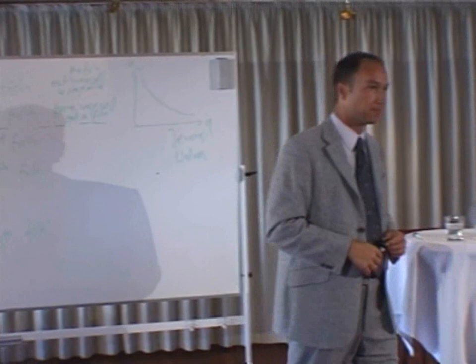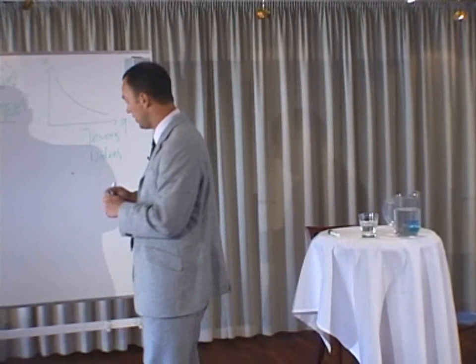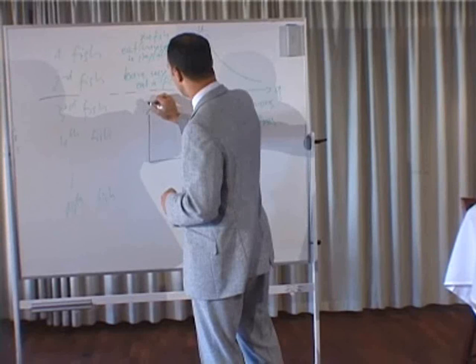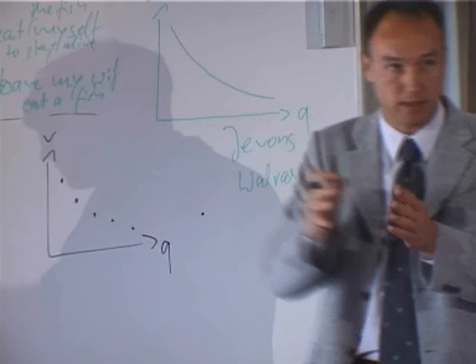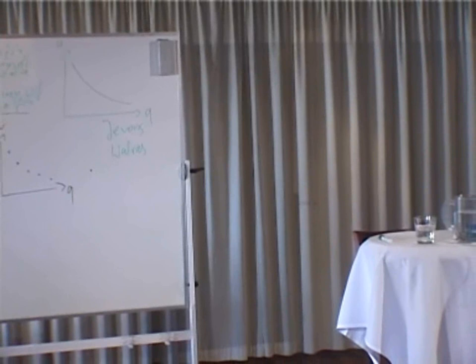We can express this in a curve, or rather in discrete and concrete dots — no continuous curve — in the case of fish. We have a very similar principle to Jevons and Walras, but there is one important difference that we need to discuss: the distinction between the psychological account and the praxeological account.